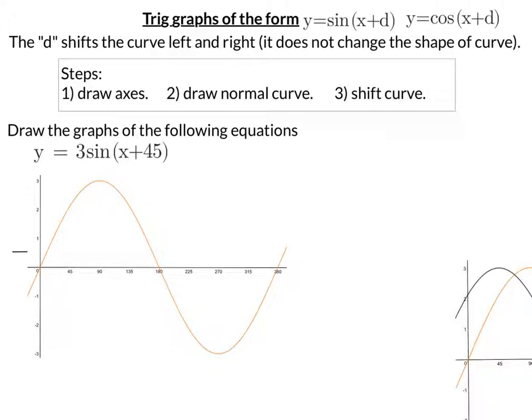Well, this time it's a sine and it's 3 sine x. So once you draw it, remember to make it go from 3 down to negative 3. That's the only bit that changed with 3 in front of the sine x.